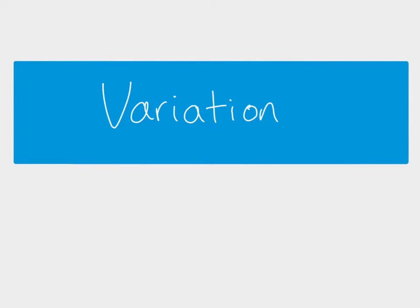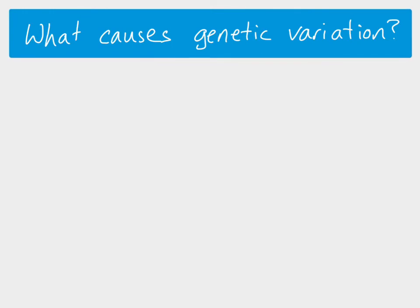This video is looking at variation. Starting briefly with the causes of genetic variation: within a population there are different genotypes, and mutation is the cause of new variation coming into a population in terms of new alleles. If you were to look at all of the genes in a population...